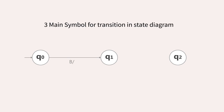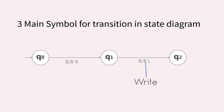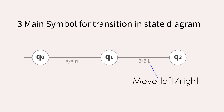Now let's look at the three main symbols for the transition in the state diagram: Read, Write, and Move left or right.